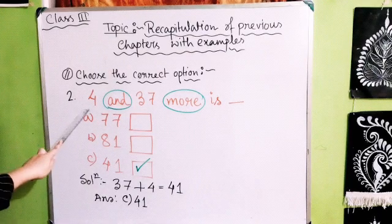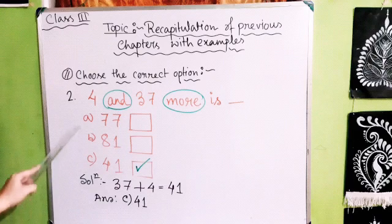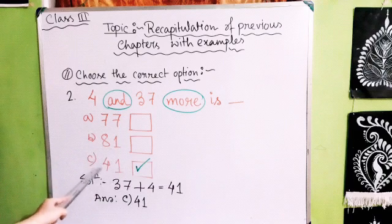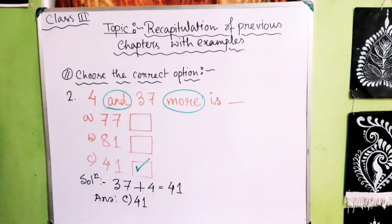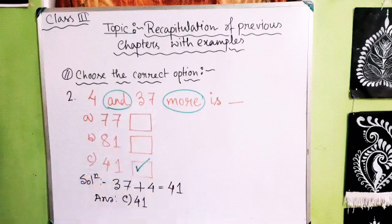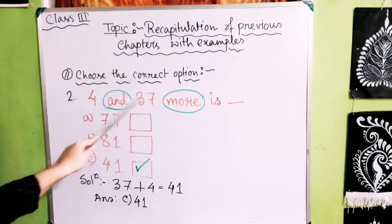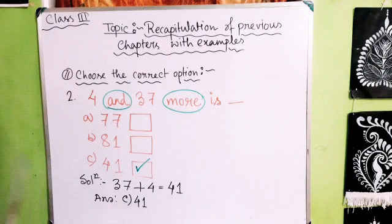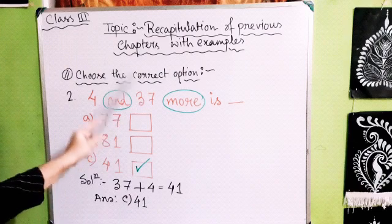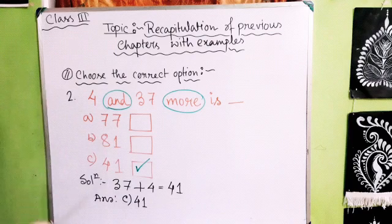Our second question is: 4 and 37 more is — Option A: 77, Option B: 81, Option C: 41. Read it carefully. The keywords are 'more' and 'and,' which indicate addition. So 4 and 37 more means 37 plus 4 equals 41. The answer is Option C: 41.